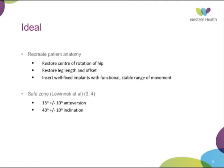Harris in 1980 aimed for 30 degrees of abduction — slightly more closed — and 20 degrees of anteversion. Harkness was similar to Lewinnek, recommending 45 degrees of abduction and 15 degrees of anteversion, with a safe zone of plus or minus 5 degrees.